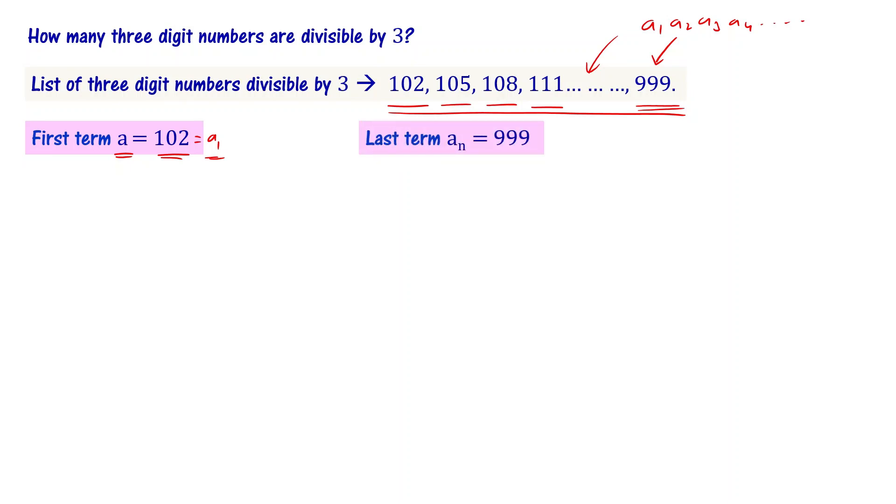The last term is denoted as aₙ, the nth term. 999 is the nth term. We know the nth term formula, so we can use it to find the n value, which will be our answer.